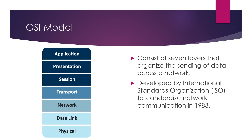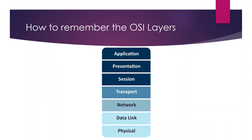The OSI model consists of seven layers used to organize the way data is sent across the network. Those seven layers are: Application, Presentation, Session, Transport, Network, Data Link, and Physical. The Application layer is layer seven, whereas the Physical layer is layer one.